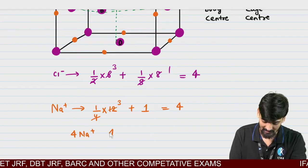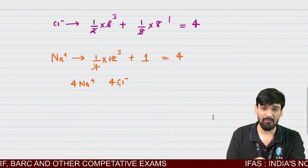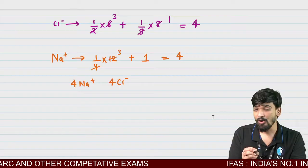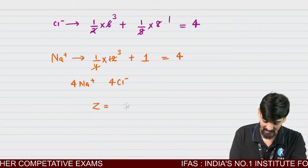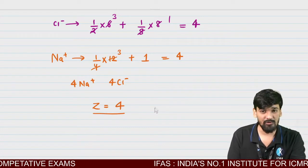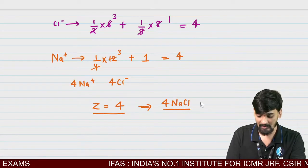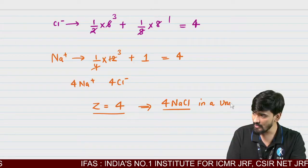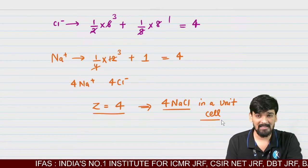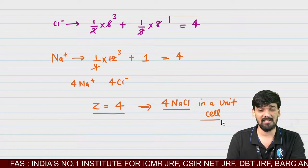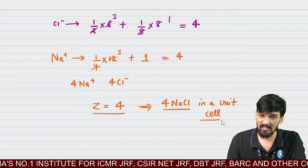So 4 Na+ and 4 Cl- ions are present in one unit cell. The effective number of NaCl molecules in one unit cell is Z = 4, meaning 4 NaCl formula units per unit cell. Now let us find the relation between the edge length and the radius of sodium plus and chlorine negative.